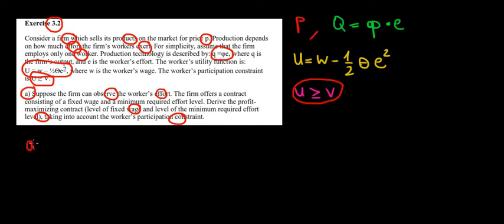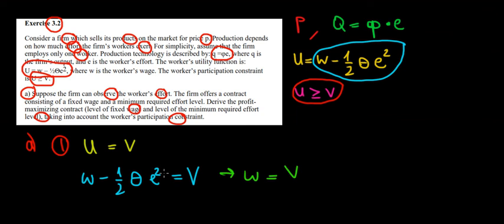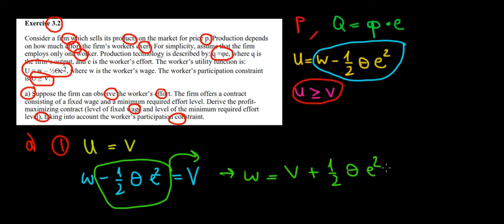First, we apply the participation constraint: the worker gets utility at least equal to the alternative utility. The utility function is wage minus the cost of effort, so we have: wage minus one-half times theta times e squared equals V. Solving for the wage, we get W equals V plus one-half theta e squared. So we have calculated the fixed salary the firm must pay.